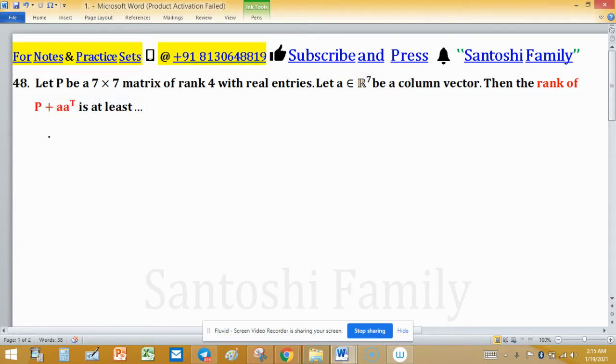So what is given: P is a 7×7 matrix and rank of this matrix is 4. Also field is real, means entries of P coming from real field. A column vector A is coming from R^7. So A can be written as, or of the type A1, A2, A3, and so on, A7. So this is vector A and this is column vector, so you can write transpose here.